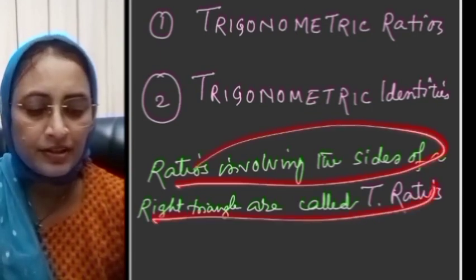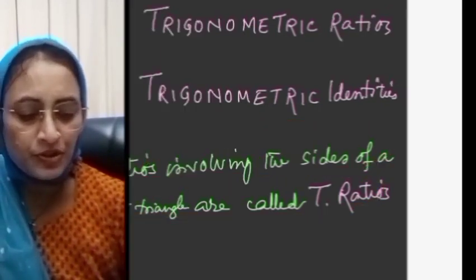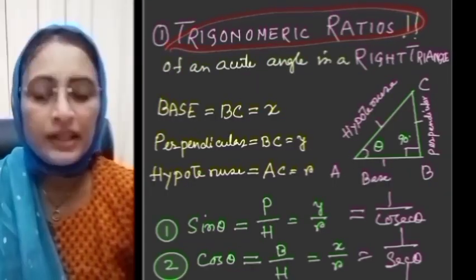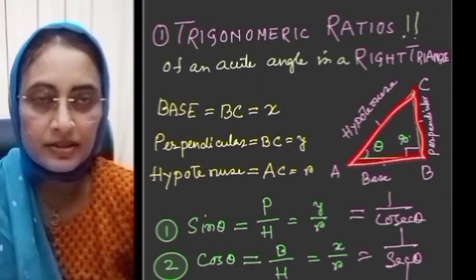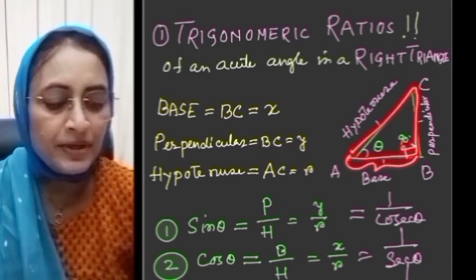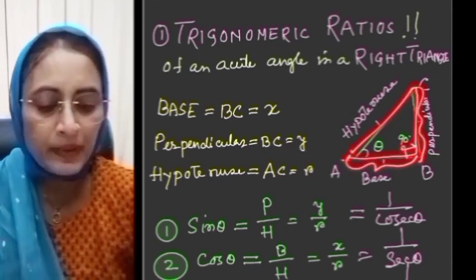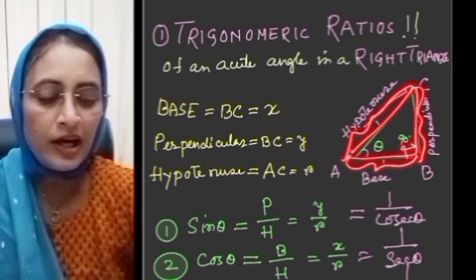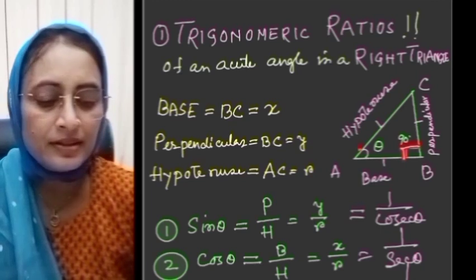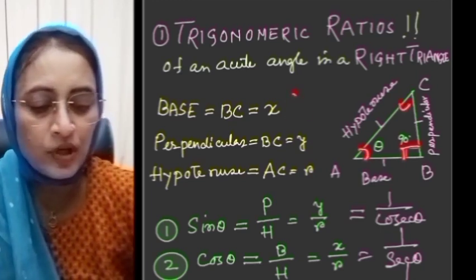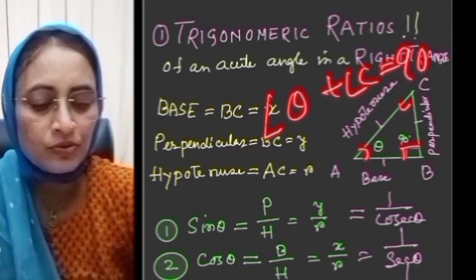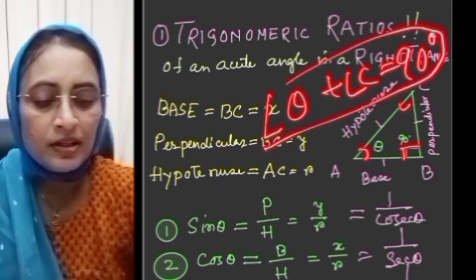Trigonometric ratios of an acute angle of a right triangle express the relation between the angle and the length of its sides. ABC is a right angle triangle where angle B is equal to 90 degrees, AB is equal to base, BC is equal to perpendicular, and AC is equal to hypotenuse. If this angle is 90 degrees, then the sum of the other two angles — angle theta plus angle C — is equal to 90 degrees.